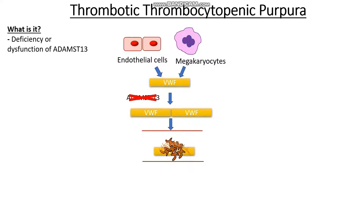Once the platelet clot has been made, it will actually also activate the clotting cascade. This will lead to the formation of a fibrin sheath on top of the clots that are forming. Now we know that this fibrin sheath is actually very sticky. However, another thing that this fibrin sheath can be, especially when we get lots and lots of formation of these mini clots all over our body, is that it can be quite sharp.